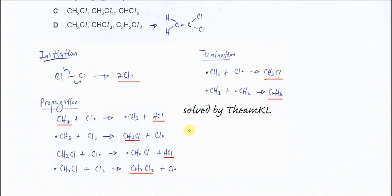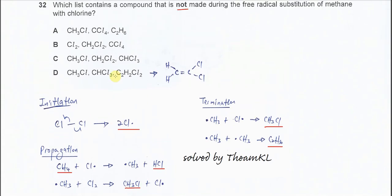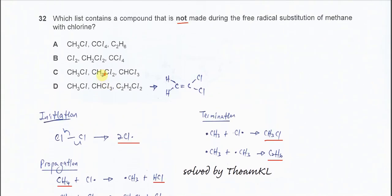From this free radical substitution, actually there could be more. I just showed you the three steps that are involved. Let's go to the answer. For option A, CH3Cl, yes it's possible to form. CCl4 also yes, and ethane also possible to form, so the answer is not A.